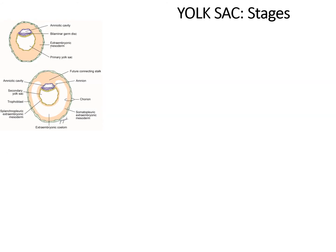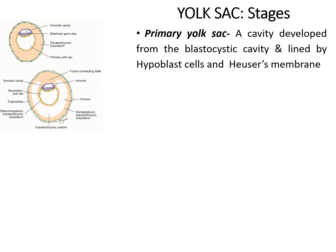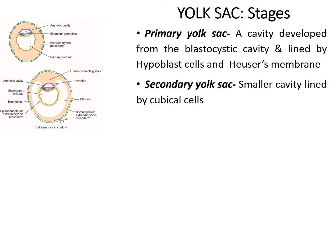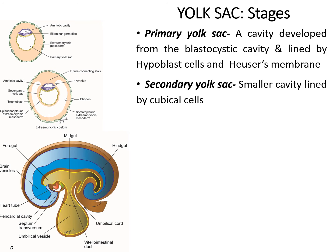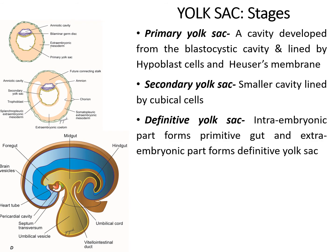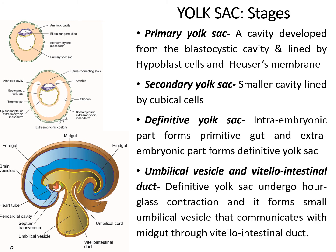The stages of yolk sac formation: around the 9th to 10th day, the blastocyst cavity forms the primary yolk sac, lined by cuboidal hypoblasts and flattened cells of Heuser's membrane. Around the end of the 2nd week, due to formation of the extra-embryonic mesoderm and extra-embryonic coelom, the yolk sac becomes small and lined by cuboidal cells, now called the secondary yolk sac. During the 4th week, as a result of folding, part of the yolk sac becomes enclosed in the embryo forming the primitive gut; the remaining extra-embryonic part is called the definitive yolk sac, which undergoes hourglass contraction to form a small umbilical vesicle communicating with the midgut through the vitello-intestinal duct.